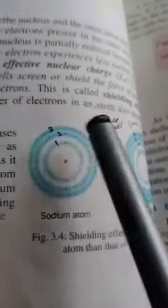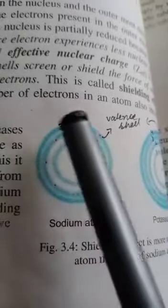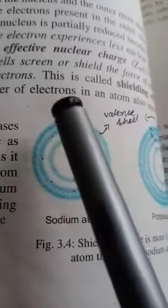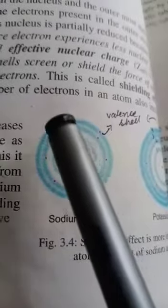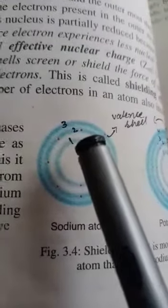In potassium case we will see this third shell - nucleus and third shell valence shell, and nucleus around two shells.